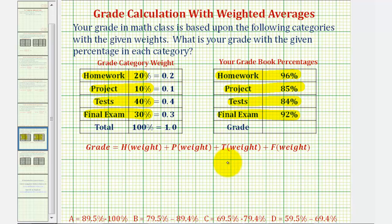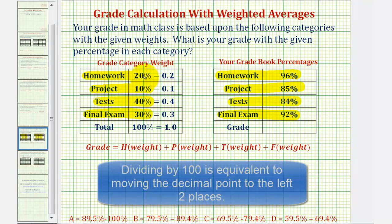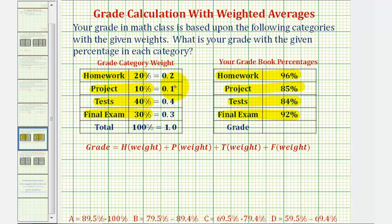To perform a weighted average, we first want to convert all the percentages for each category into a decimal. Remember to convert a percentage to a decimal, we drop the percent symbol and divide by 100. So 20 percent equals 0.2, 10 percent equals 0.1, 40 percent equals 0.4, and 30 percent equals 0.3.